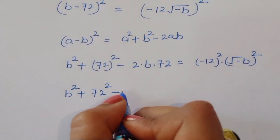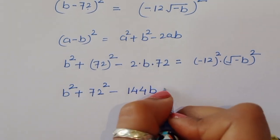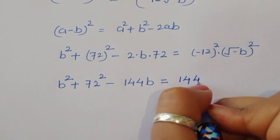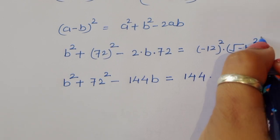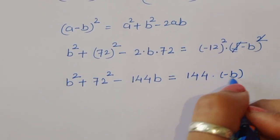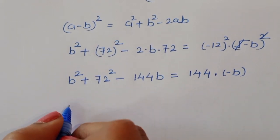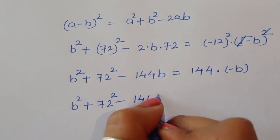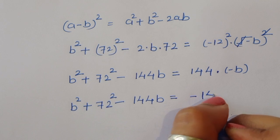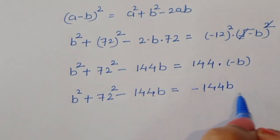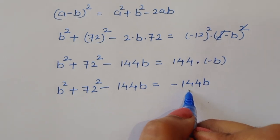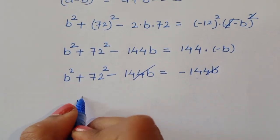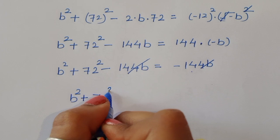So we have b² + 72² - 144b = 144 × (-b), which is b² + 5184 - 144b = -144b. The -144b terms cancel from both sides, leaving b² + 72² = 0.